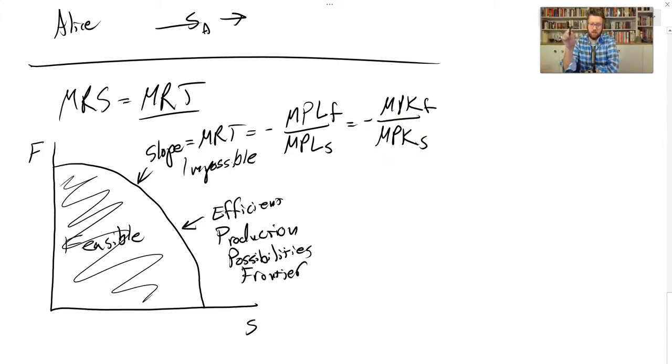Notice if we rearrange all those, we get back to the condition that the marginal rate of technical substitution for producing food or shelter are equal to each other.